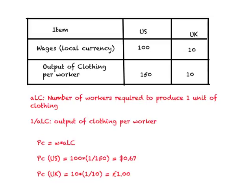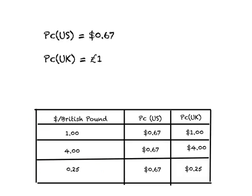Let us figure out the price of clothing in the U.S. and U.K. in autarky in terms of their own currencies. The price of clothing in the U.S. will be 100 (wages) times 1/150, which gives us $0.67 — so an article of clothing costs 67 cents. For the U.K., wages are 10 pounds and ALC is 1/10, giving us 1 pound. So the same clothing costs 67 cents in the U.S. and 1 British pound in the U.K.